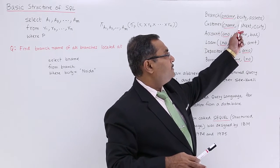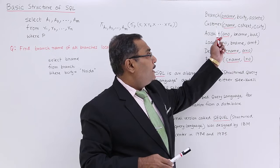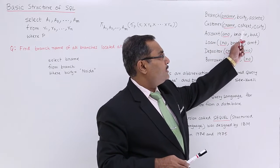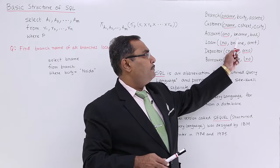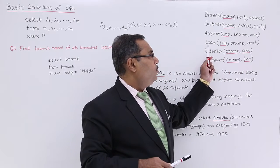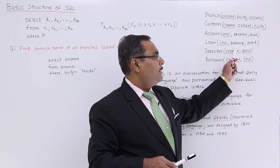Branch is having branch_name, branch_city, branch_assets. Customer is having customer_name, customer_street, and customer_city. Account is having account_number, branch_name, and balance. Loan is having loan_number, branch_name, and amount.